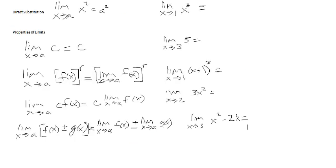Let's start looking at some of the properties and rules and we'll do an example of each. The first is direct substitution, which is the most basic form of taking a limit. It means that you plug in your a value into the function and it outputs our limit. You just have to be careful that your denominator is not zero or something that would prevent us from using direct substitution — we'll cover more complicated limits in future videos.